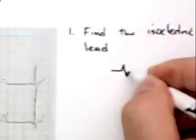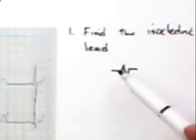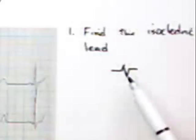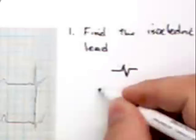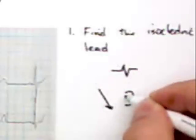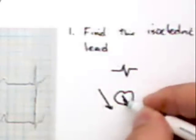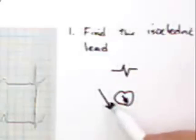And the first simple rule is find the isoelectric lead. Isoelectric means essentially there's the same amount of voltage above and below. The reason you want to find that lead is because that lead is having the most difficulty seeing the voltage change. Remember, really briefly, if you're looking at lead 2 and this is the heart, if the voltage is going with the lead, then it's going to be a big positive deflection.